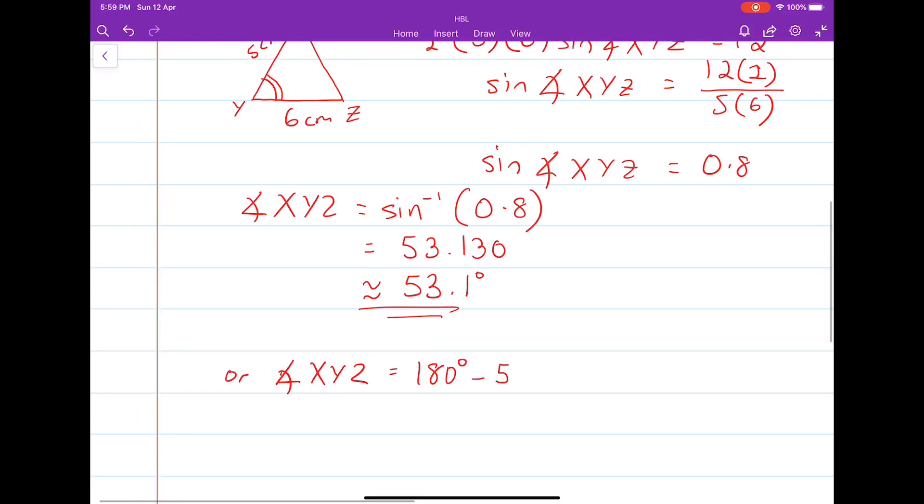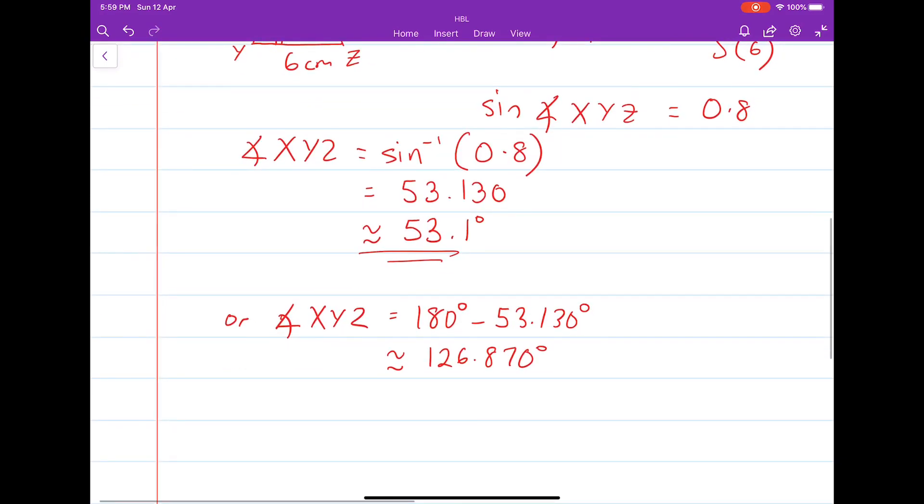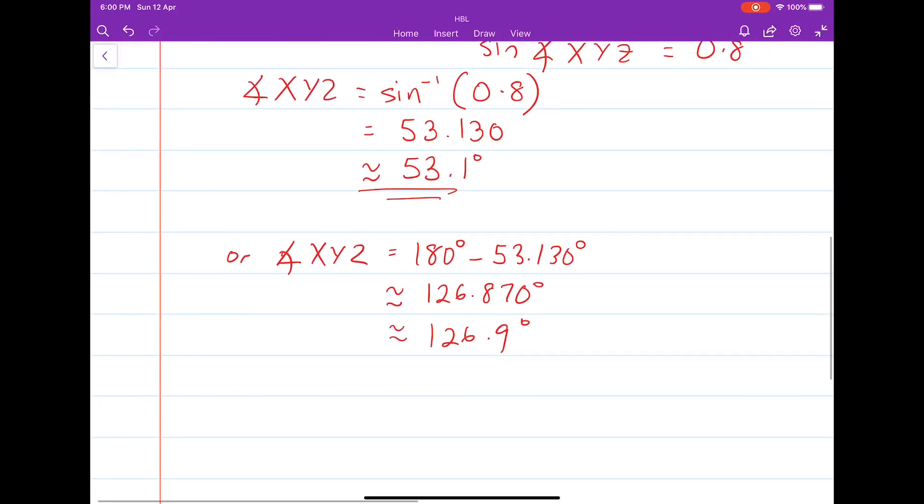And that angle is actually equals to 180 degrees minus the first angle that you found, 53.130 degrees, which is approximately equals to 126.870 degrees, and then we round it off to the nearest 1 decimal place, 126.9.